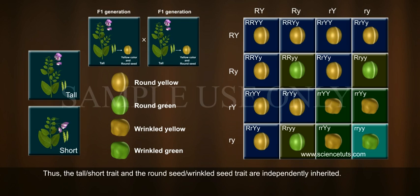Thus, the tall or short trait and the round seed or wrinkled seed trait are independently inherited.